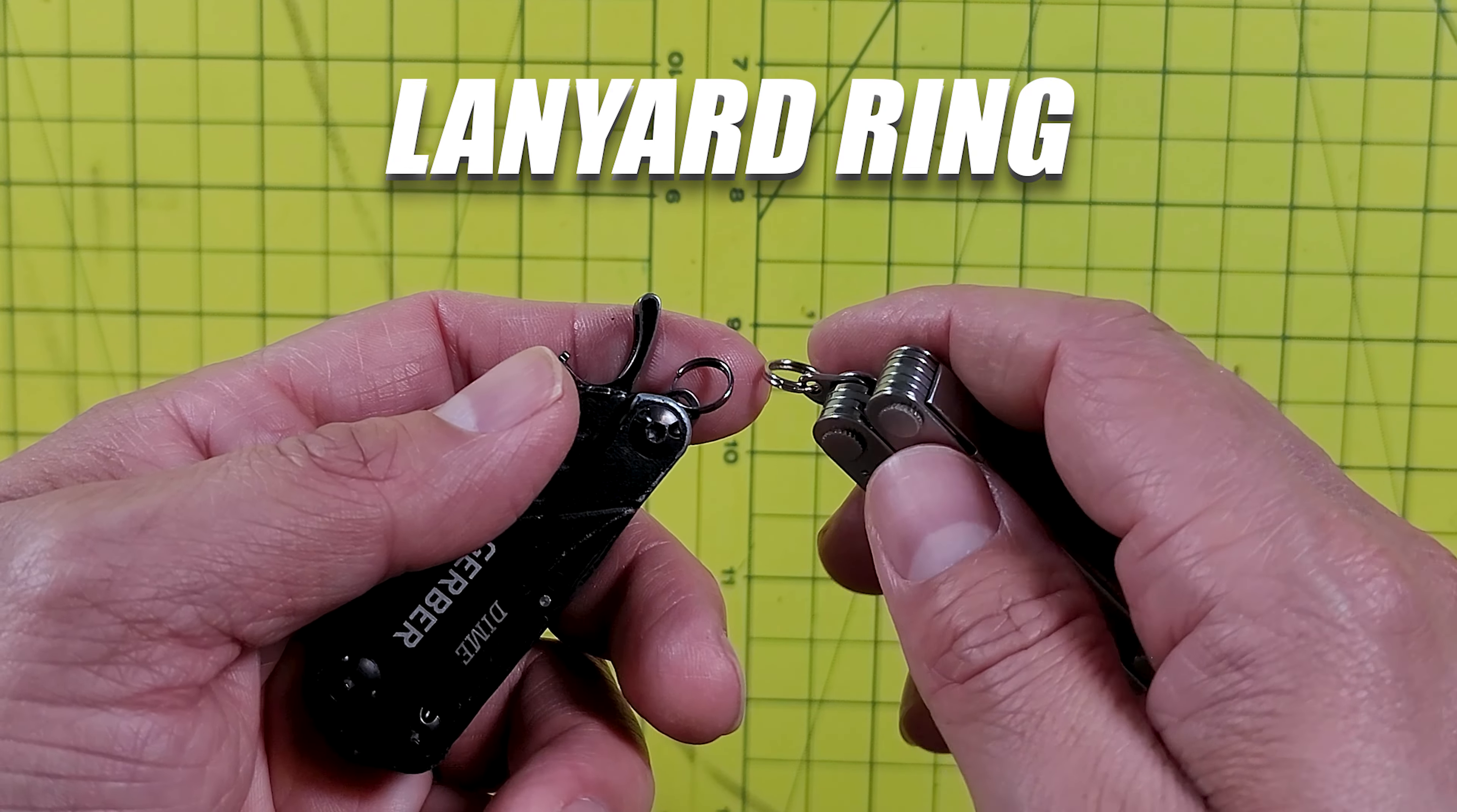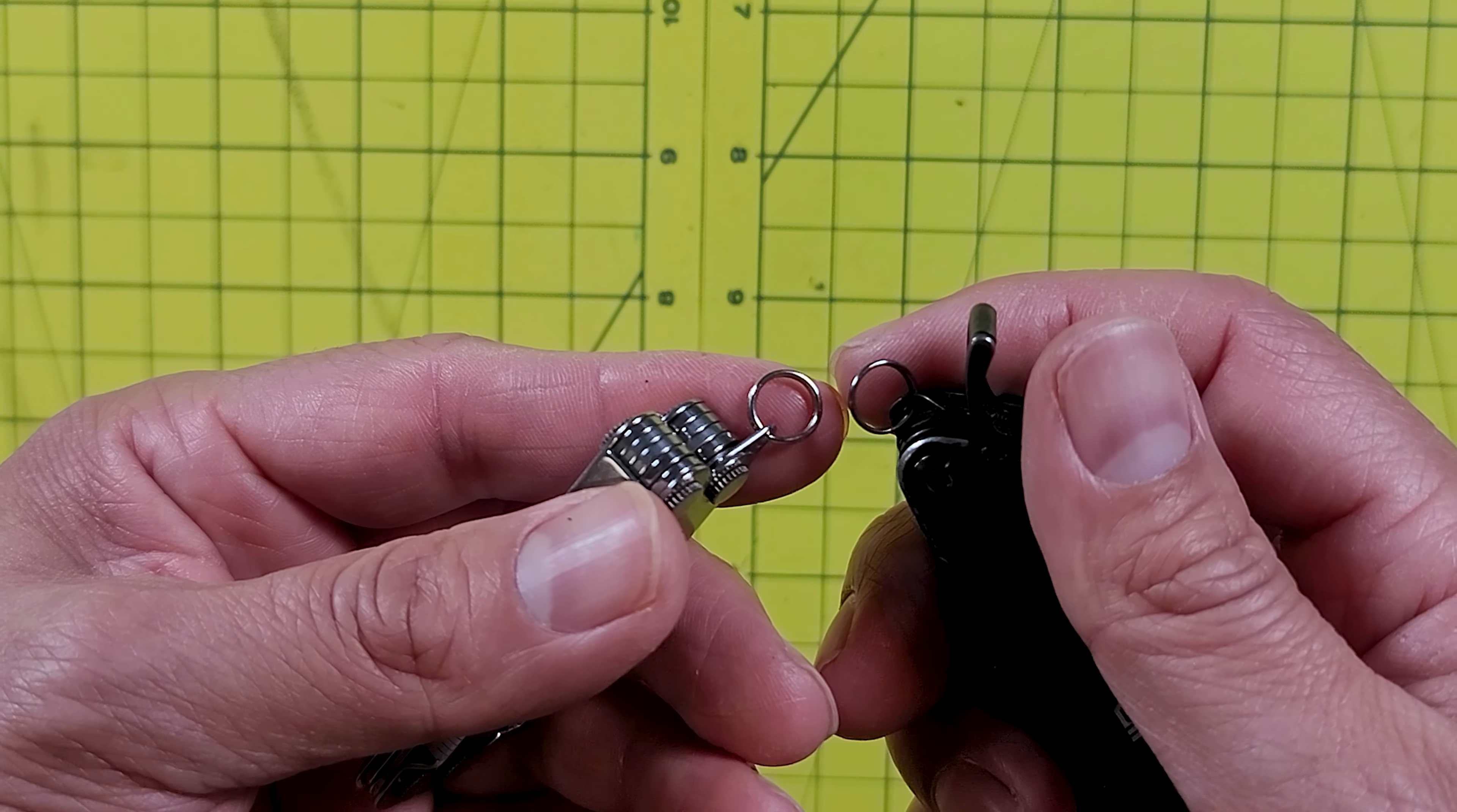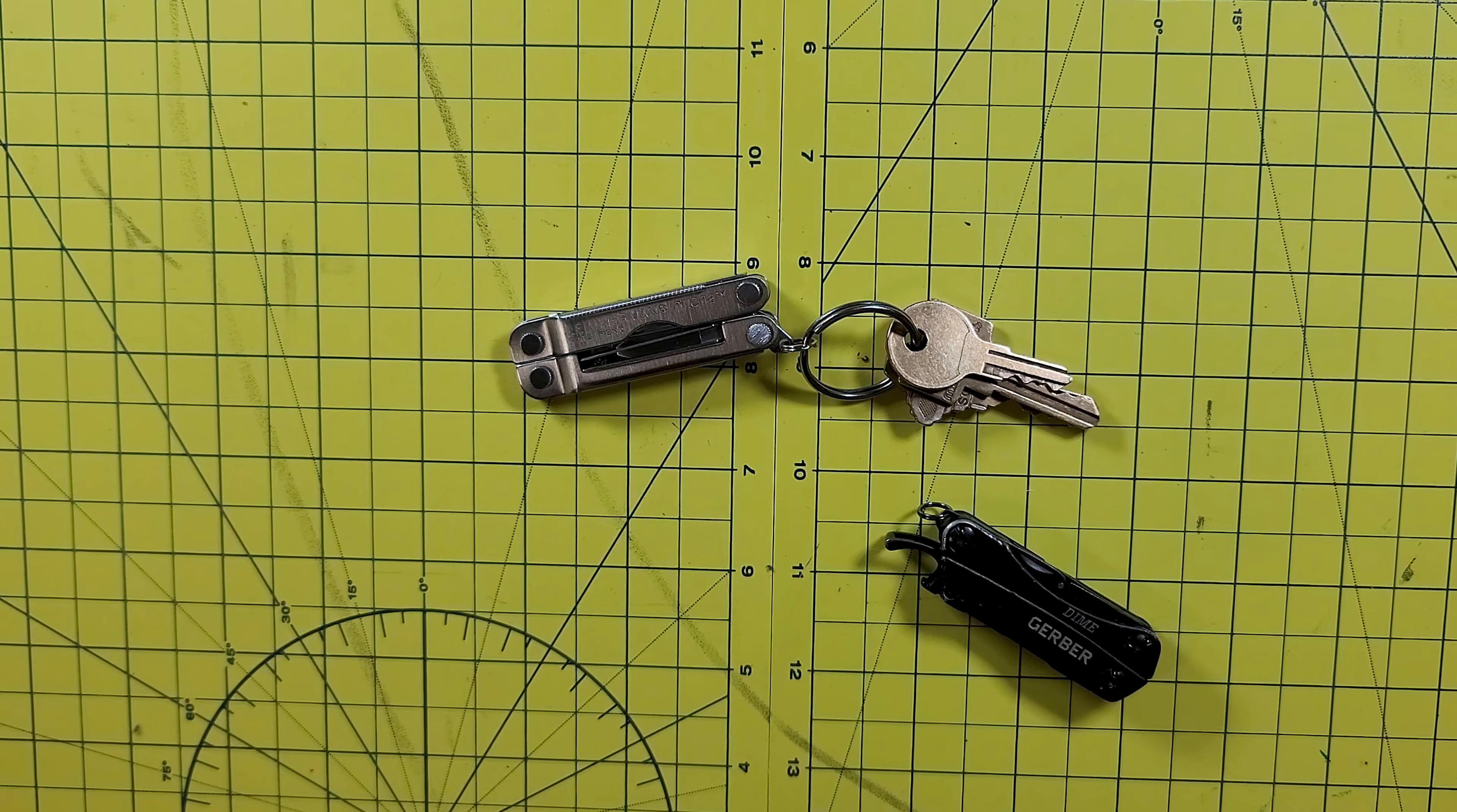Finally you have the lanyard ring. The lanyard rings may look almost identical, but the Dime's ring feels flimsy compared to the one on the Micro. But that's something that can be replaced for a thicker ring, and that may be something you want to do if you get the Dime, because the last thing you want to do is lose your tool because of a flimsy lanyard ring. So when it comes to the lanyard rings, the Micro takes the win in my opinion.